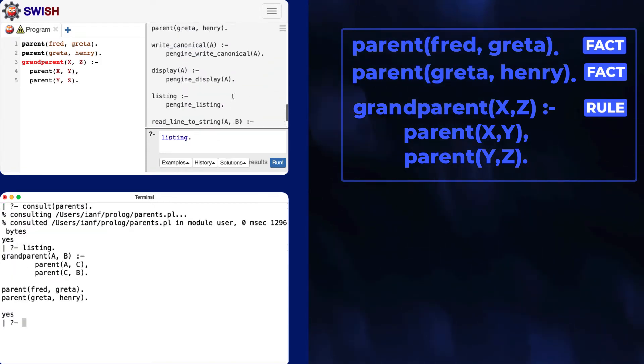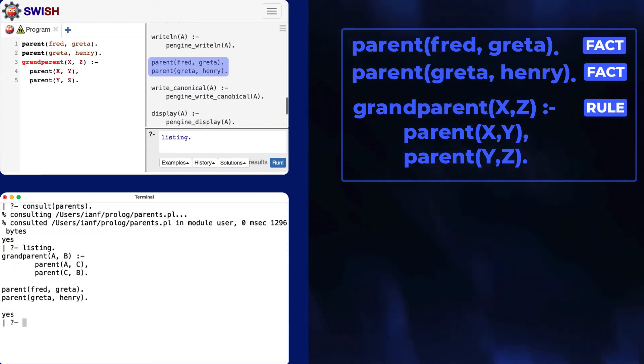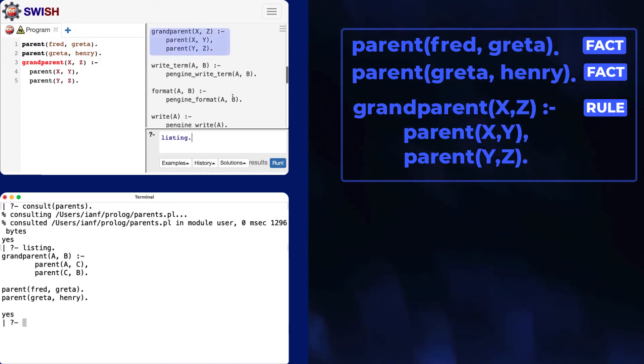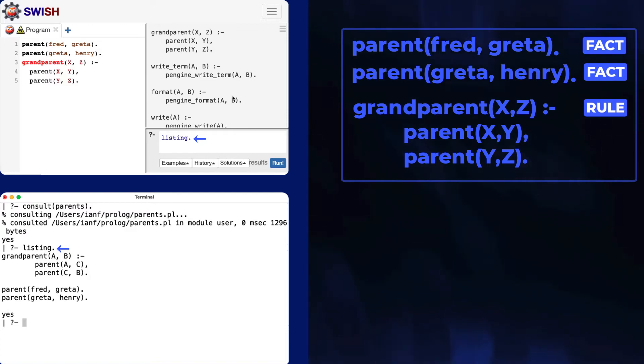Confirm using listing. On Swish, you get extra information, but there is the program. Remember that prologue input needs this final period. Depending on the prologue you use, the listing may change the variable names. This doesn't change the meaning of the program.